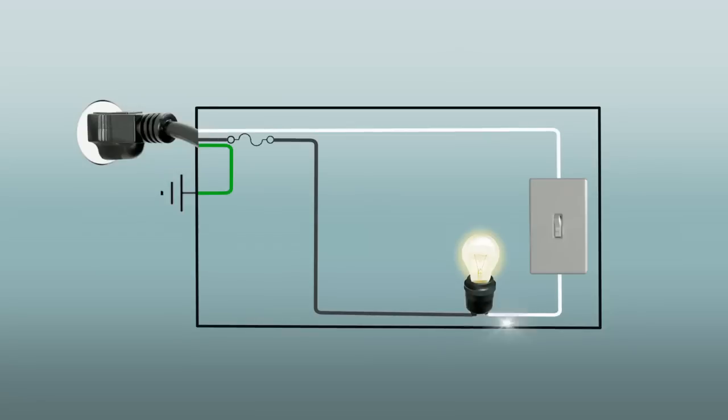There are two main types of circuits having the same key elements: a power source, conductors, load, and a control device. The two types of circuits are series circuits and parallel circuits.